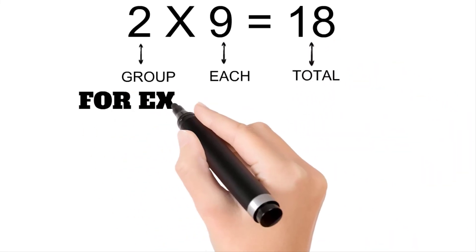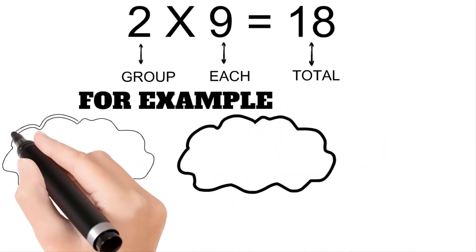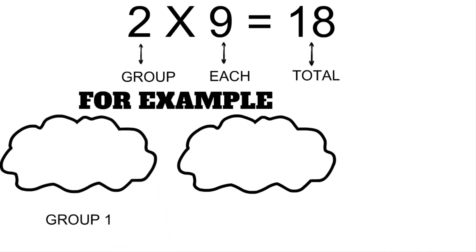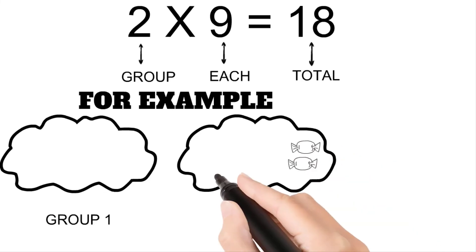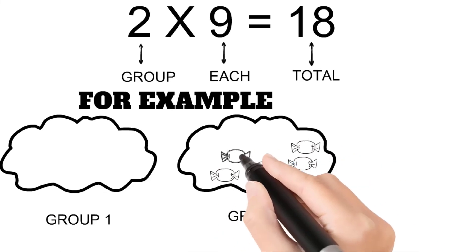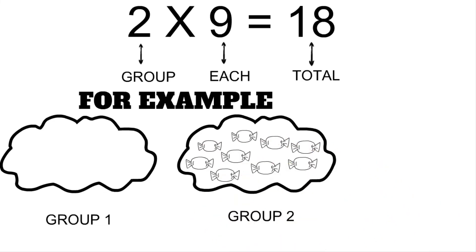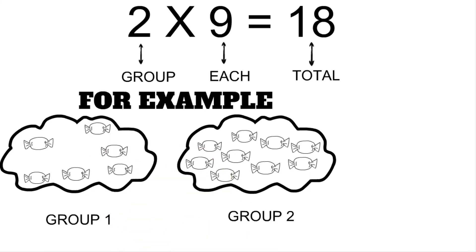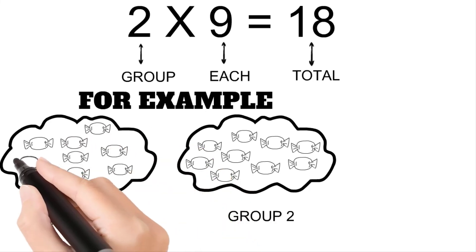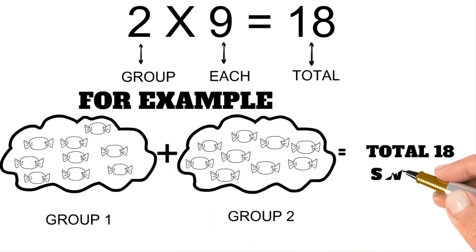For example, we have two groups — group one and group two. Each group has nine sweets. When we add these two groups together, we will get a total of eighteen sweets.